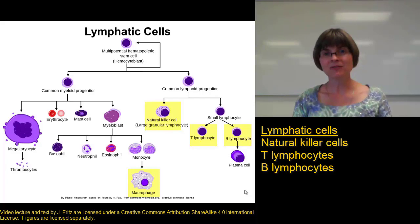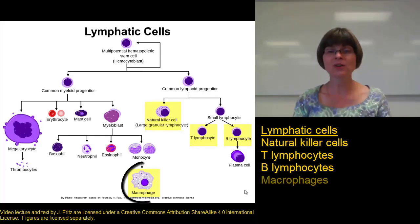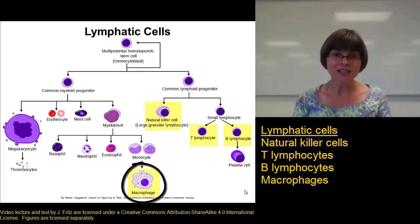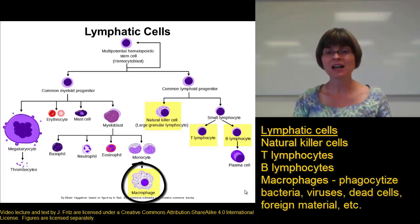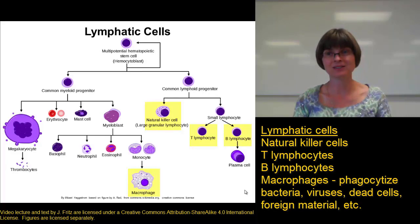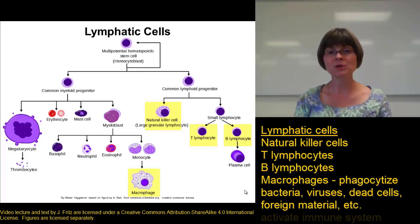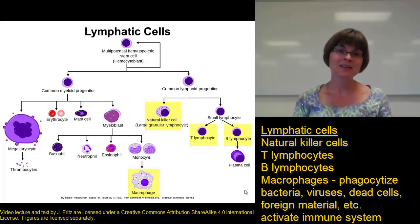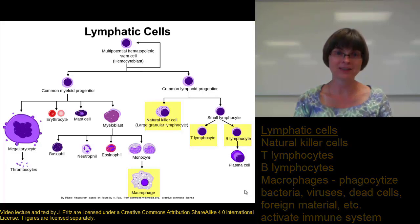The final type of lymphatic cell to be aware of is one we've talked about before: the macrophages, the cleanup cells. They clean up dead cells and debris, and they phagocytize all sorts of things that don't belong, including bacteria, viruses, and a lot of other things. Importantly, they are also involved in the activation of specific immune cells in order to fight particular pathogens.